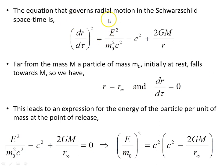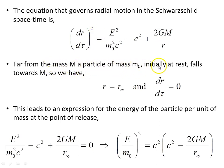The equation that covers radial motion in the Schwarzschild spacetime, as derived in the previous video on Schwarzschild geodesic motion, gives this result for pure radial motion. Far from the mass M, the particle of rest mass m0, initially at rest, falls towards M. So at that initial point, r equals r-infinity far away, and dr/dτ equals 0 — it starts from rest.